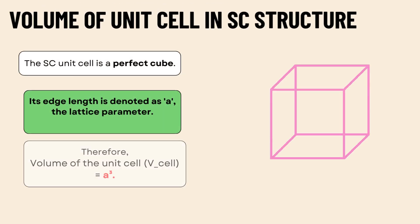The SC unit cell is a perfect cube. The edge length is denoted as A, the lattice parameter. Therefore, volume of the unit cell, V_cell, equals A³.